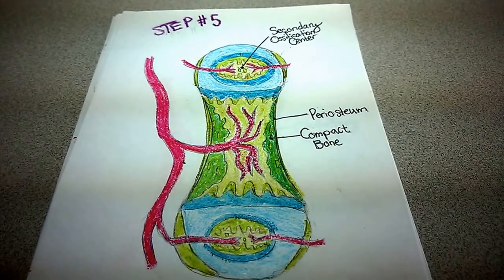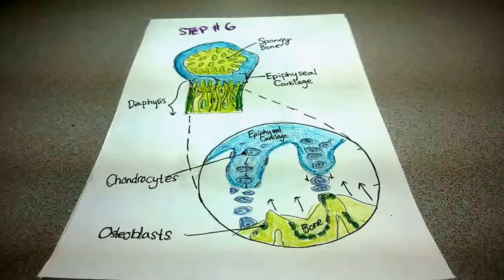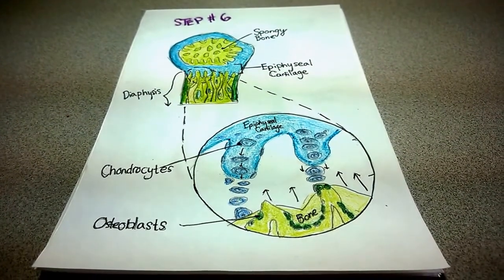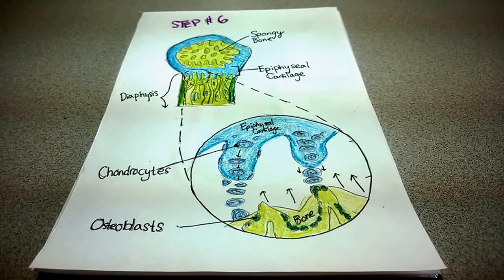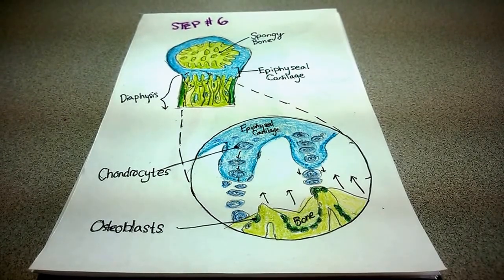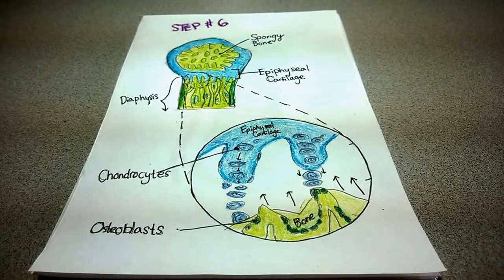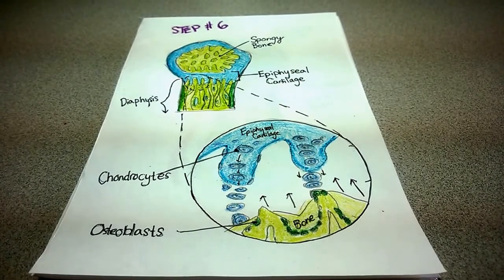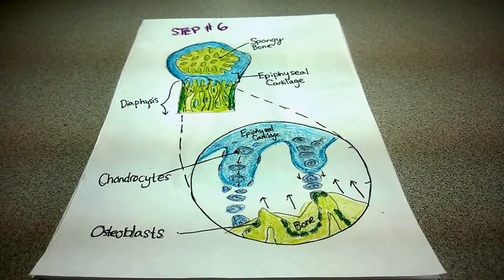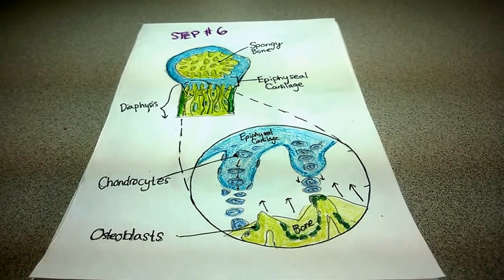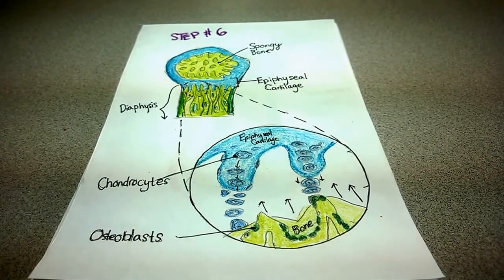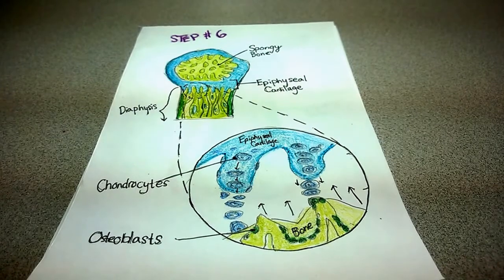Step six: The epiphyses fill with spongy bone. This creates an epiphyseal cartilage plate. At this point, the bone needs to do some lengthening. So as the osteoblasts convert cartilage to bone on the shaft side of the metaphysis, on the other side near the ends, the epiphyseal cartilage is replacing itself so it doesn't completely ossify. This lengthens the bone over time.